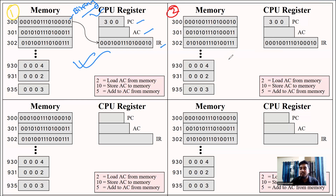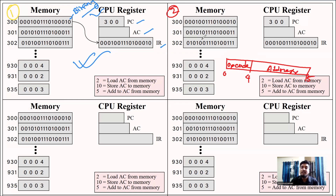When we look at the instruction format, the first 5 bits are the opcode and the rest of the bits are the address. The address is the output.